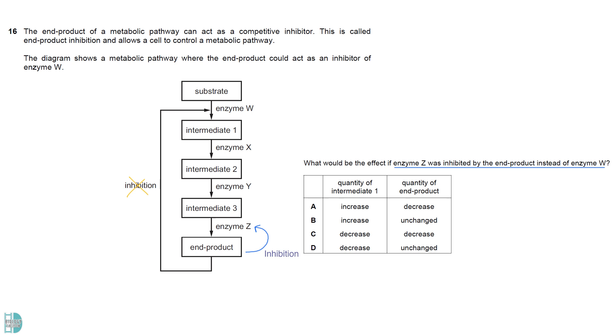If enzyme Z is inhibited, intermediate 1 would increase as the substrate would be continuously converted to 1 by enzyme W. The end product would decrease as its formation from intermediate 3 slows down.